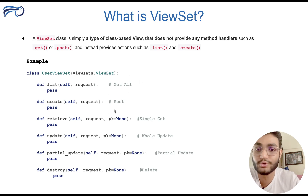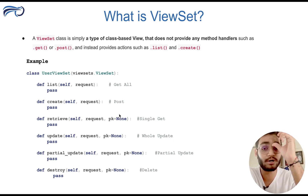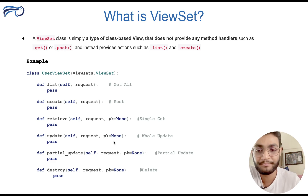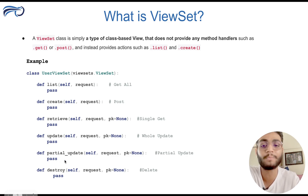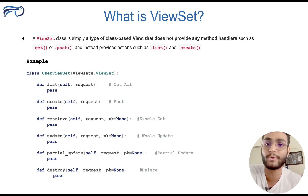There is a create method which is used to create a new entry in the database. There is a retrieve method which takes pk as an argument, which helps us get a single record from the database. There is an update method which also has pk because we want to update one entry. If you want to update only specific fields, for that we have a method called partial update. And lastly there is a method called destroy which is used to delete the entry in the database. These are all the types of methods that ViewSet provides.